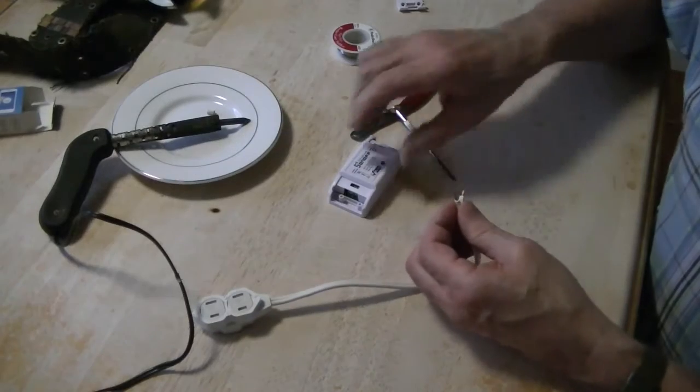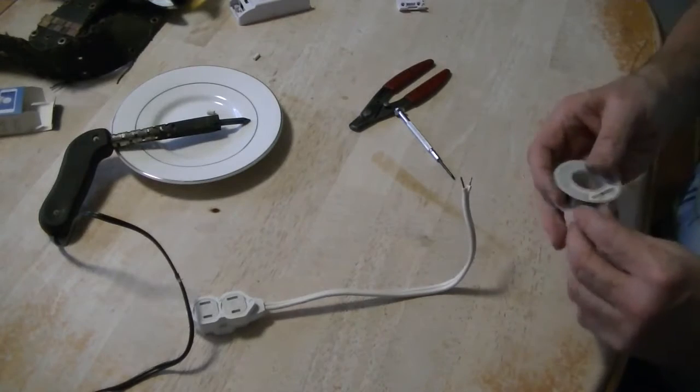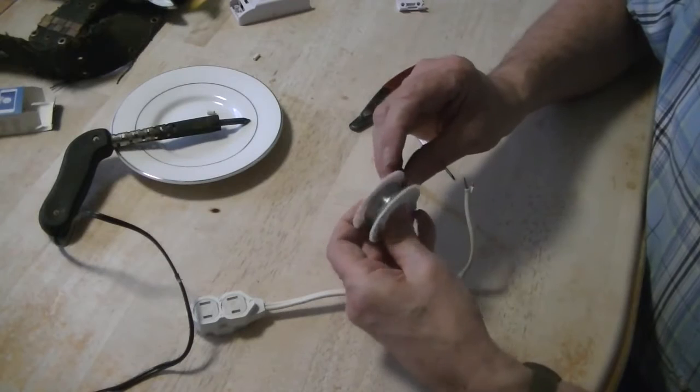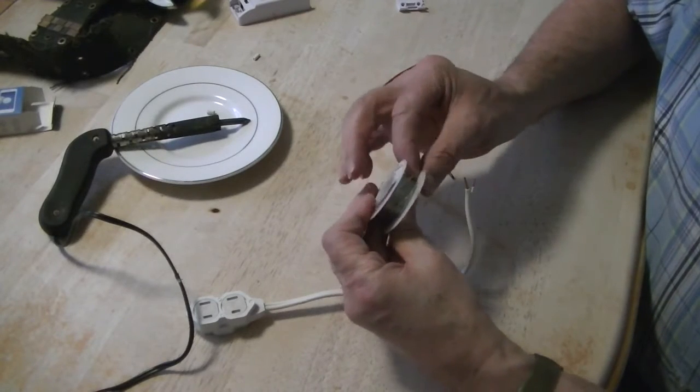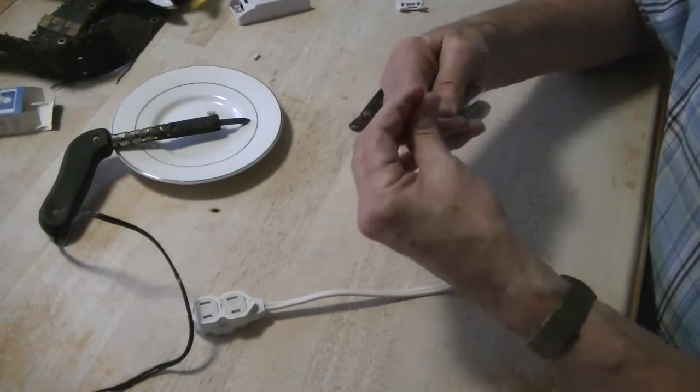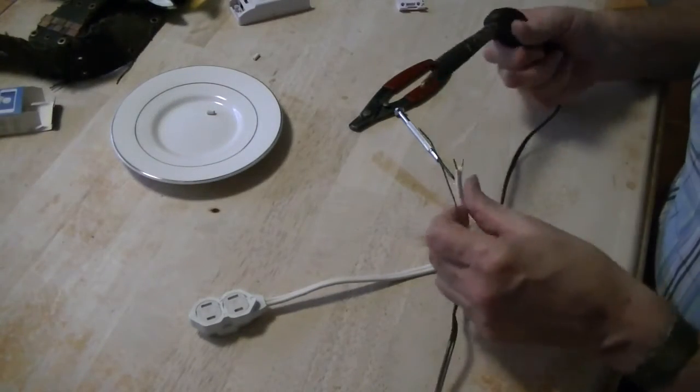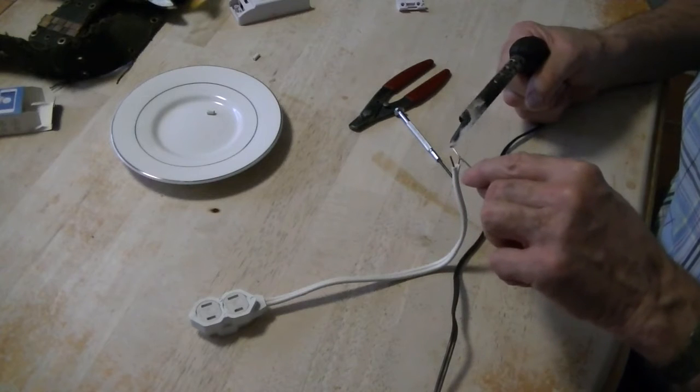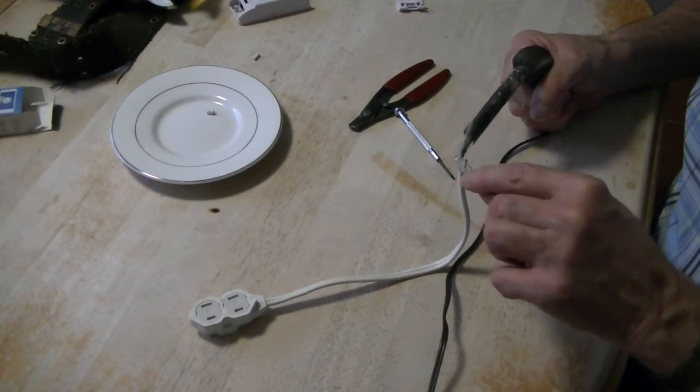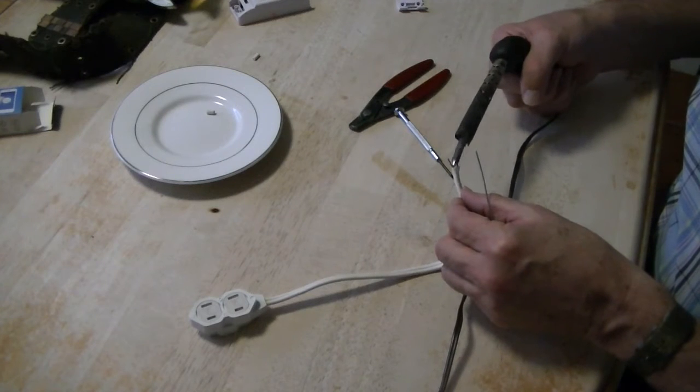So what I'll go ahead and do now, I am going to tin the wires. Normally I would want to put some flux on it but I don't have any flux, couldn't find it. This solder is very, very old, probably older than me. Okay, I think that took.